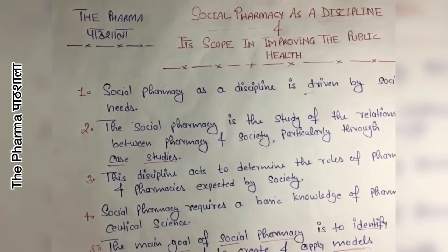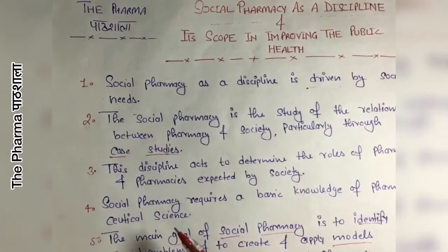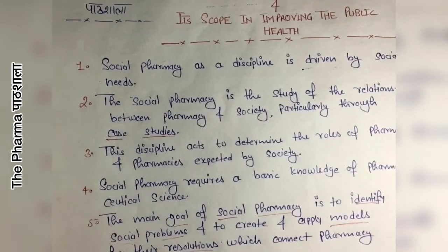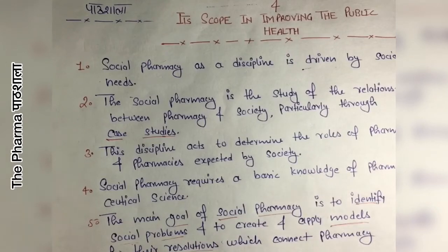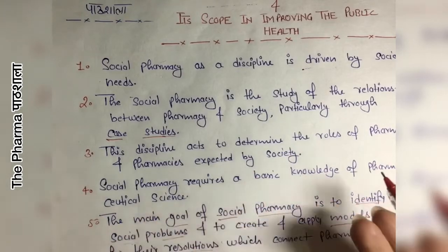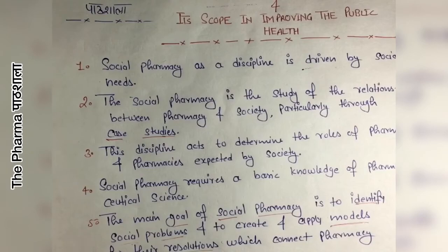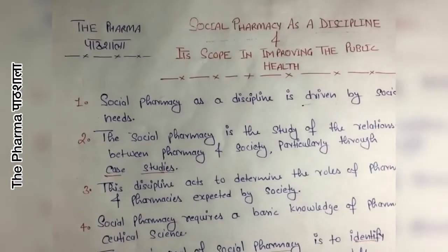So students, that was Social Pharmacy as a Discipline. I discussed 5 points through which social pharmacy as a discipline tells us what needs to be done, what its main goal is, what relationships are studied within social pharmacy, and what its main act is — which is to determine the role of pharmacists and pharmacies on the basis of society's expectations.